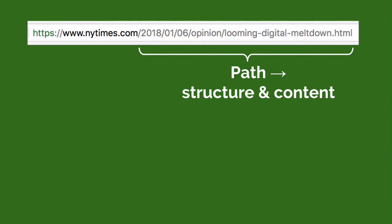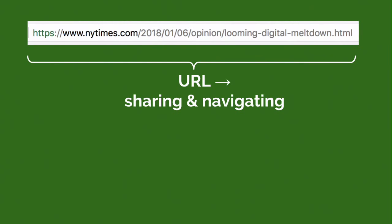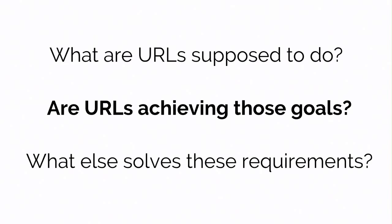The path might tell us useful information about the structure of the website as well as the content of the page. Here, for example, we know this is going to be an article about the looming digital meltdown, and we know it was published in early January of this year. The whole URL itself is supposed to be useful for sharing content — I can just copy and paste it to send friends a cool article. And it's supposed to be great for navigating too: if I hear geico.com on the radio, I can just input the URL and get there. But are URLs actually achieving any of these goals?